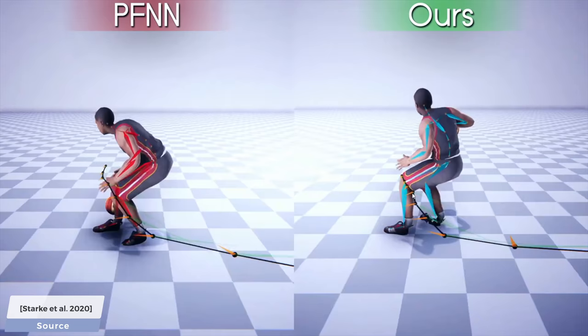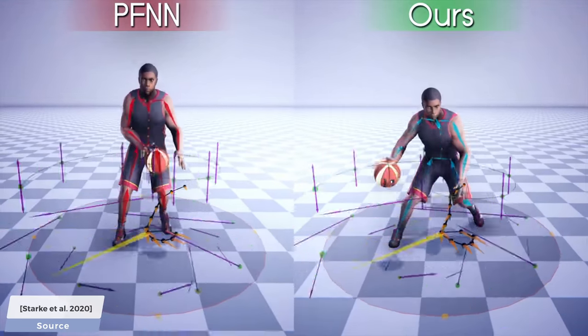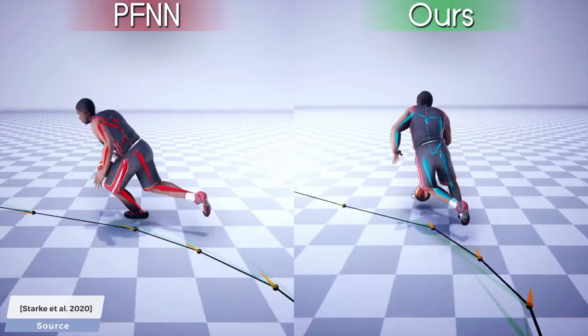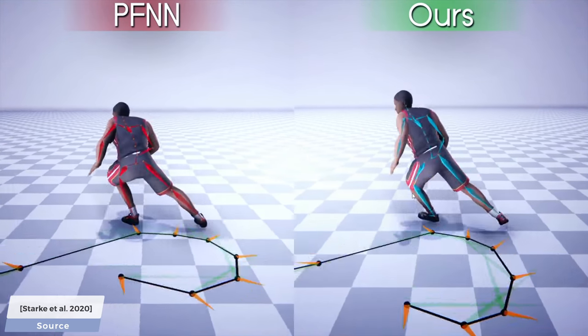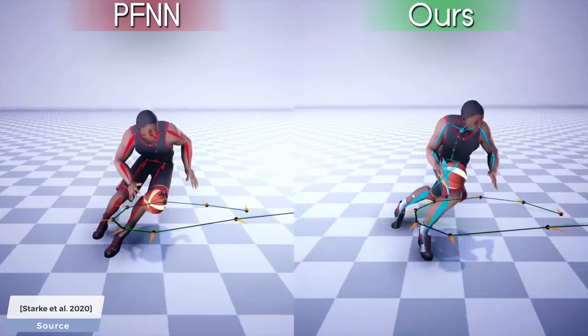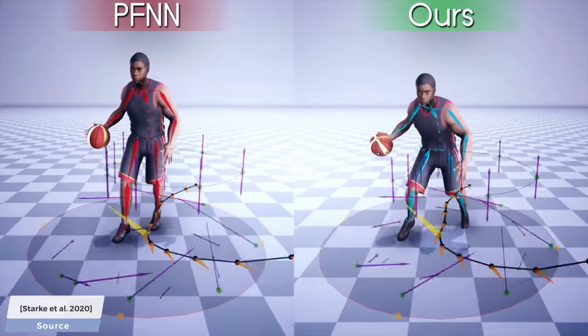When we compare these motions to a previous method, we see that both the character and the ball's movement is much more lively. For instance, here, you can see that the phase function neural network, PFNN in short, almost makes it seem like the ball has to stick to the hand of the player for an unhealthy amount of time to be able to create these motions. It doesn't happen at all with the new technique.